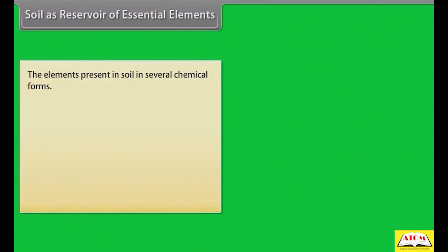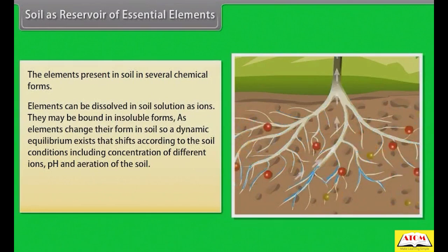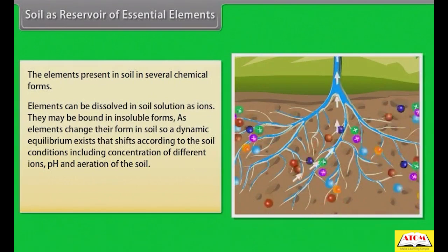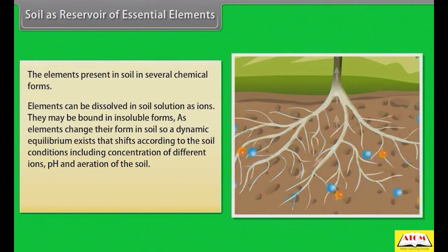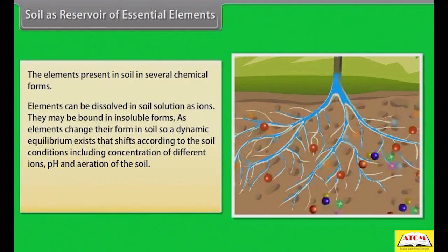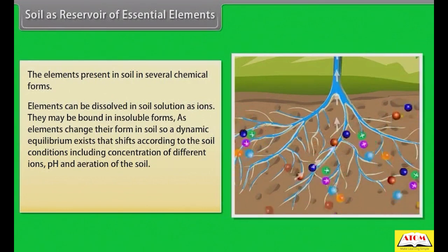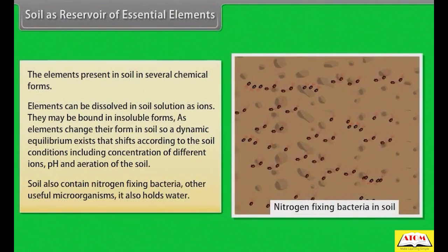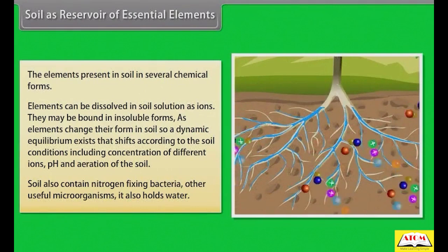Soil as reservoir of essential elements: the elements present in soil exist in several chemical forms. Elements can be dissolved in soil solution as ions, or they may be bound in insoluble forms. As elements change their form in soil, a dynamic equilibrium exists that shifts according to soil conditions, including concentration of different ions, pH and aeration of the soil. Soil also contains nitrogen-fixing bacteria and other useful microorganisms, and it also holds water.